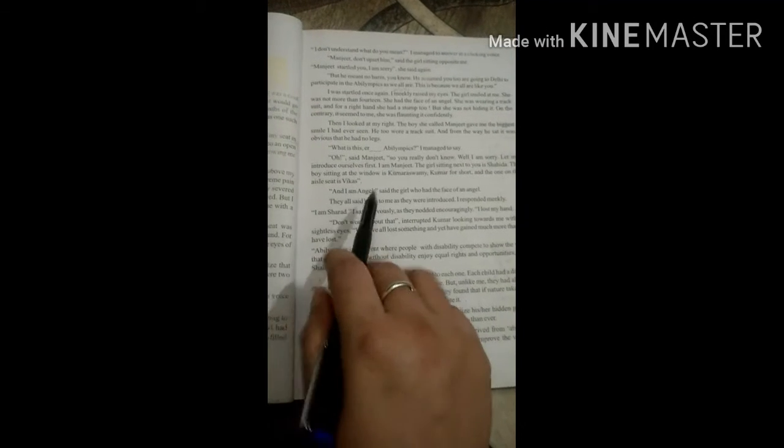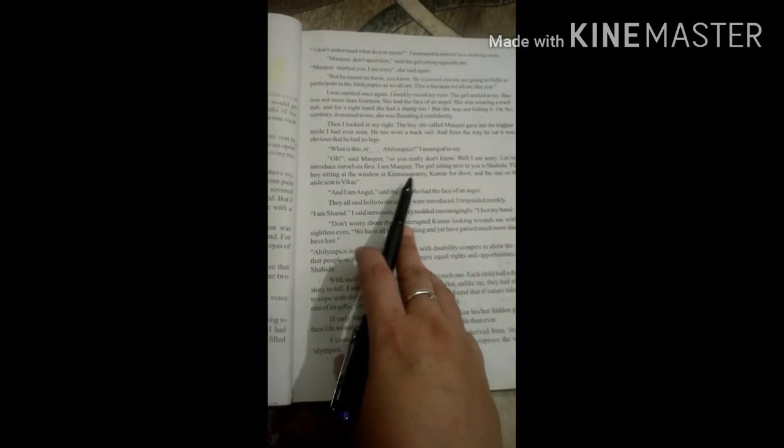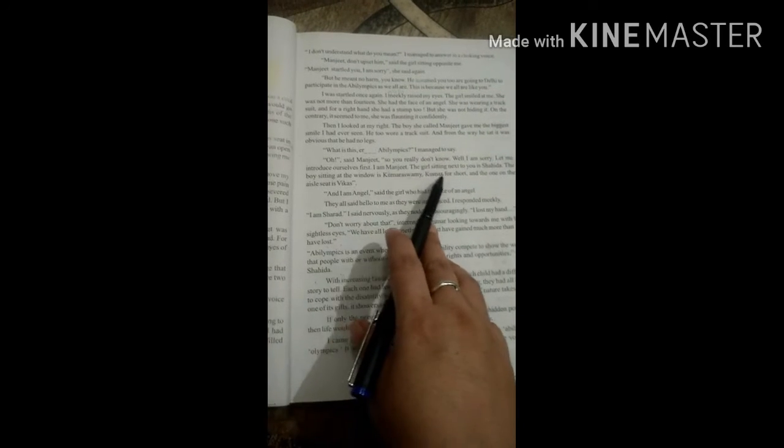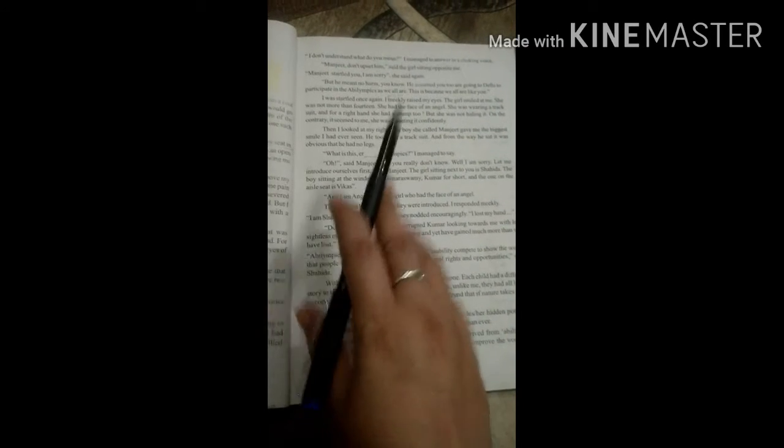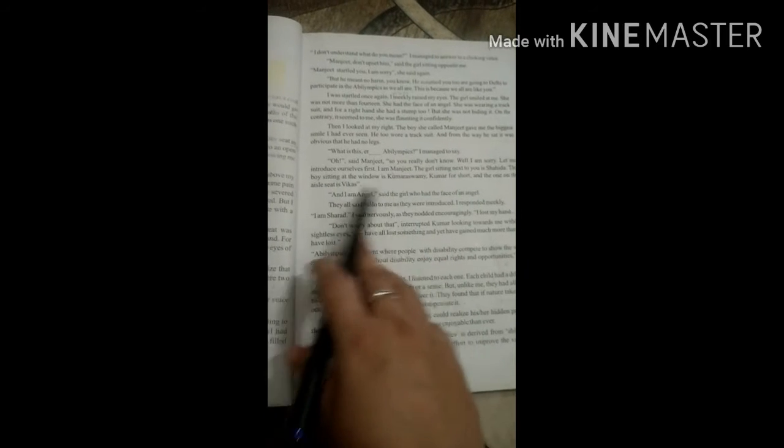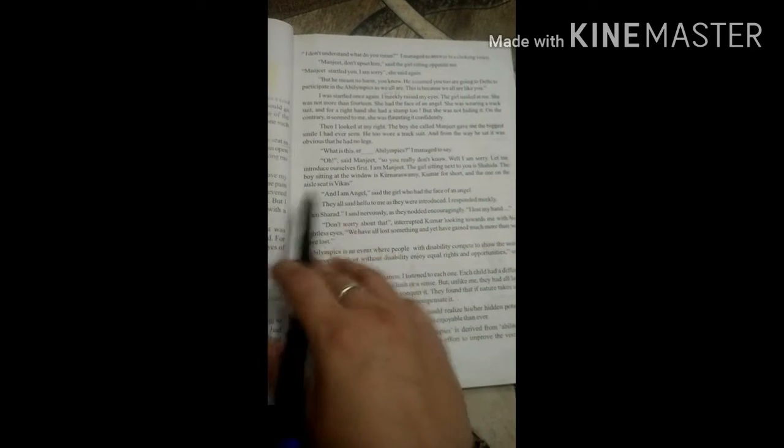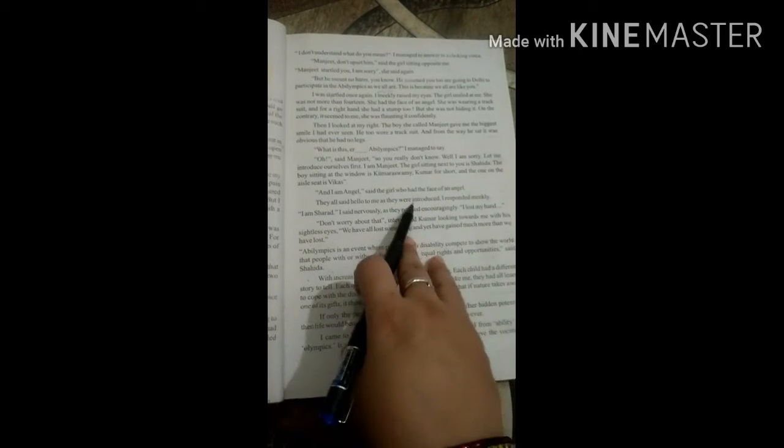So Manjeet replied, I don't know about Abilimpics. I apologize, I didn't know that you are not aware about it. So he said, let me introduce ourselves first. First, we will introduce ourselves. He has told his name Manjeet.